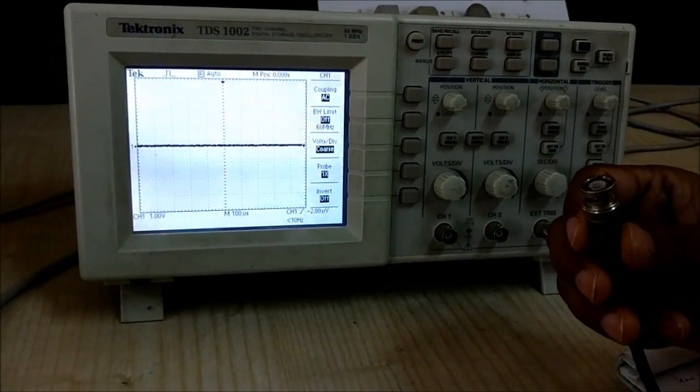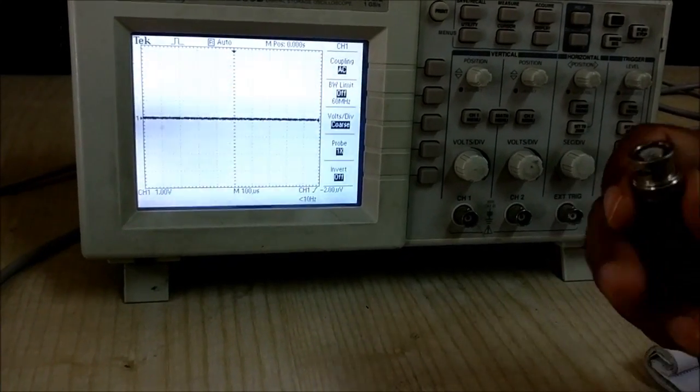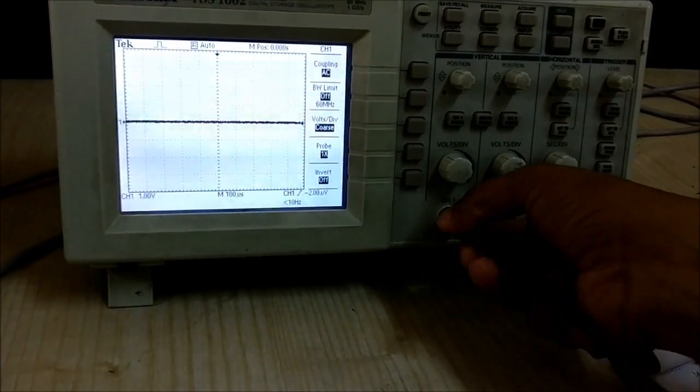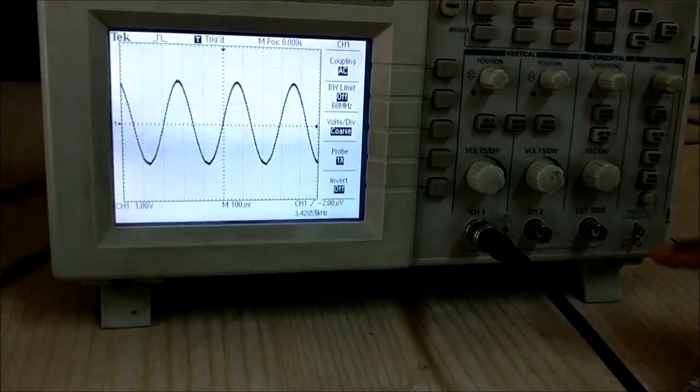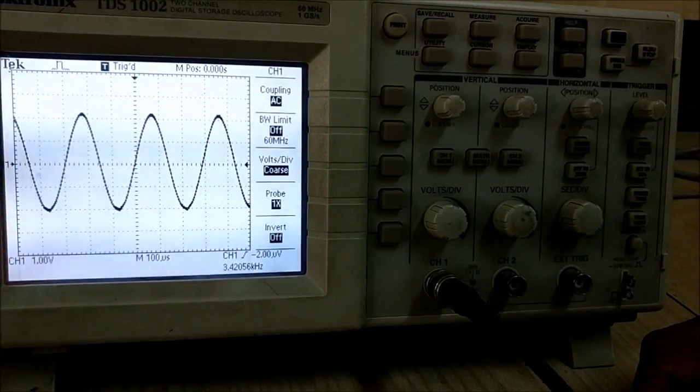BNC connector is basically a Bayonet Neill-Concelman connector. This is used to take input and connect it to channel 1 or channel 2. As soon as we have connected, we can see a sinusoidal signal is coming.